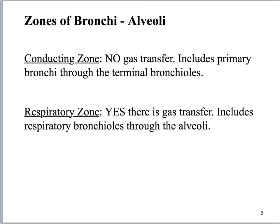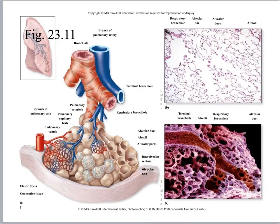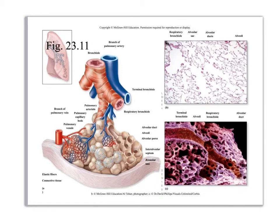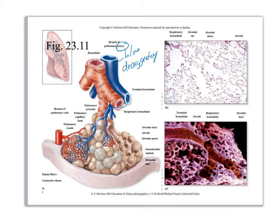Here I'm showing what I said on the previous slide, but bigger. I've got a bronchial coming down, and notice it is wrapped in smooth muscle for bronchodilation and bronchoconstriction. I've also got a branch of the pulmonary artery — notice it is blue even though it is an artery, because it is deoxygenated blood coming from the pulmonary circuit or right side of the heart, coming here to pick up oxygen. The blood is going to come in here and do gas exchange.